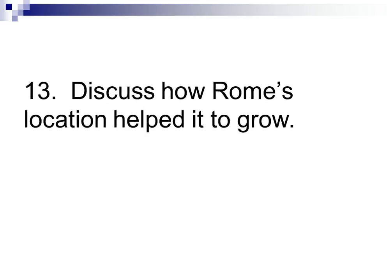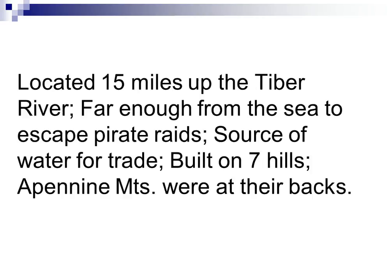Number 13: Discuss how Rome's location helped it to grow. It was located 15 miles up the Tiber River, which meant it was far enough from the sea to escape pirate raids. It was a source of water for trade, and it was also built on seven hills, which made it easier to defend — if you're at a higher elevation, you can see your enemies coming. The Apennine Mountains were right behind Rome, and the Alps separated the entire Italian peninsula from the rest of Europe as well.